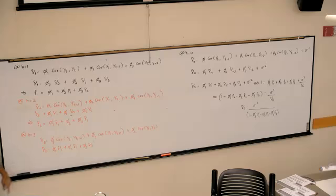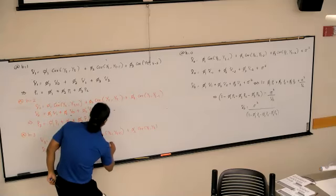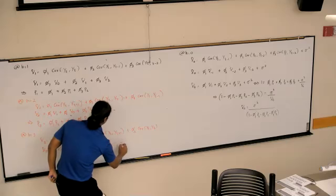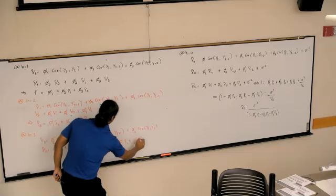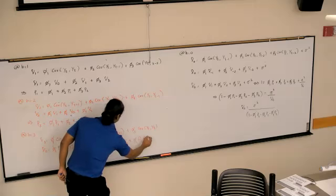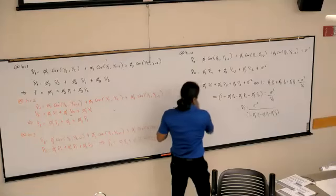If I divide by gamma 0 on both sides, I will simply get rho 3 equals phi 1 rho 2, plus phi 2 rho 1, plus phi 3.